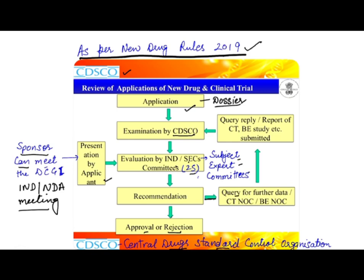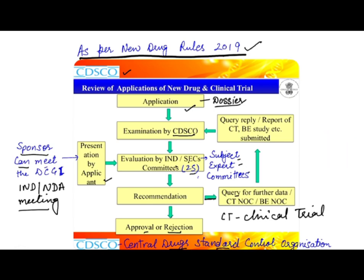This approval is called a CT NOC — Clinical Trial No Objection Certificate. 'CT' stands for Clinical Trial, and 'BE' stands for Bioequivalence. Once you resolve the query, you resubmit the application to CDSCO, which follows the same route — SEC reviews and shares recommendations again: approval, rejection, or another query. This cycle can be repeated multiple times. That is, in a nutshell, how new drugs are approved in India.